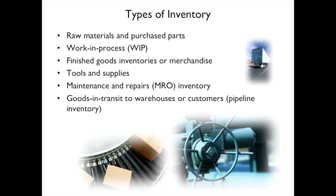There are different types of inventory. The first is raw materials and purchased parts — things that are going into what you're going to produce. There's also work in process. For example, if you're assembling a chair, all of those parts, even though they're not a finished product yet, are work in process. So that's inventory.